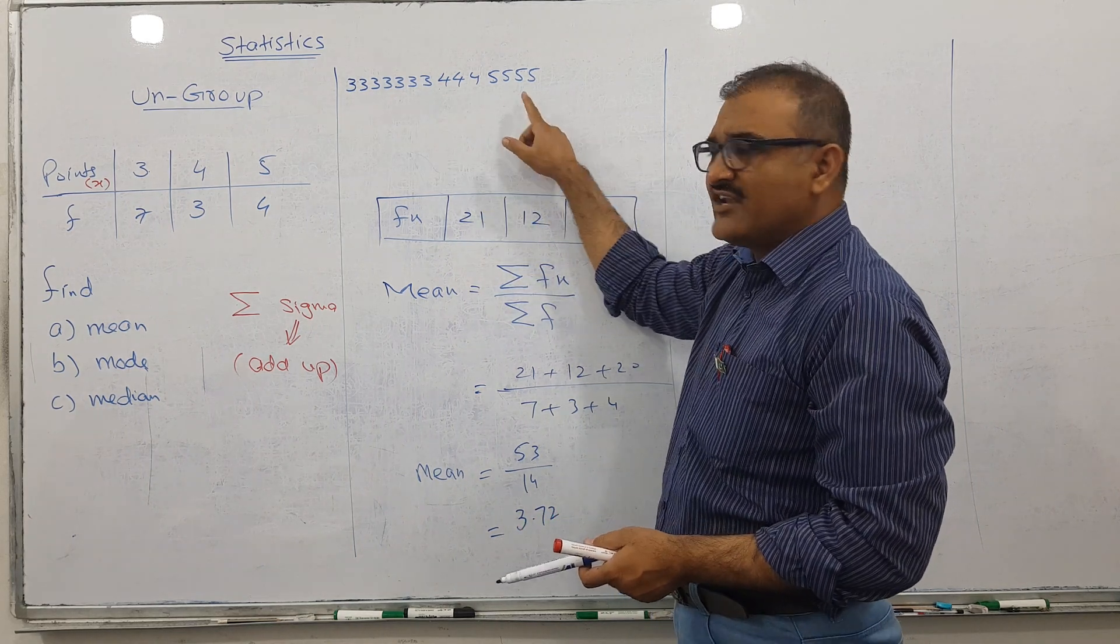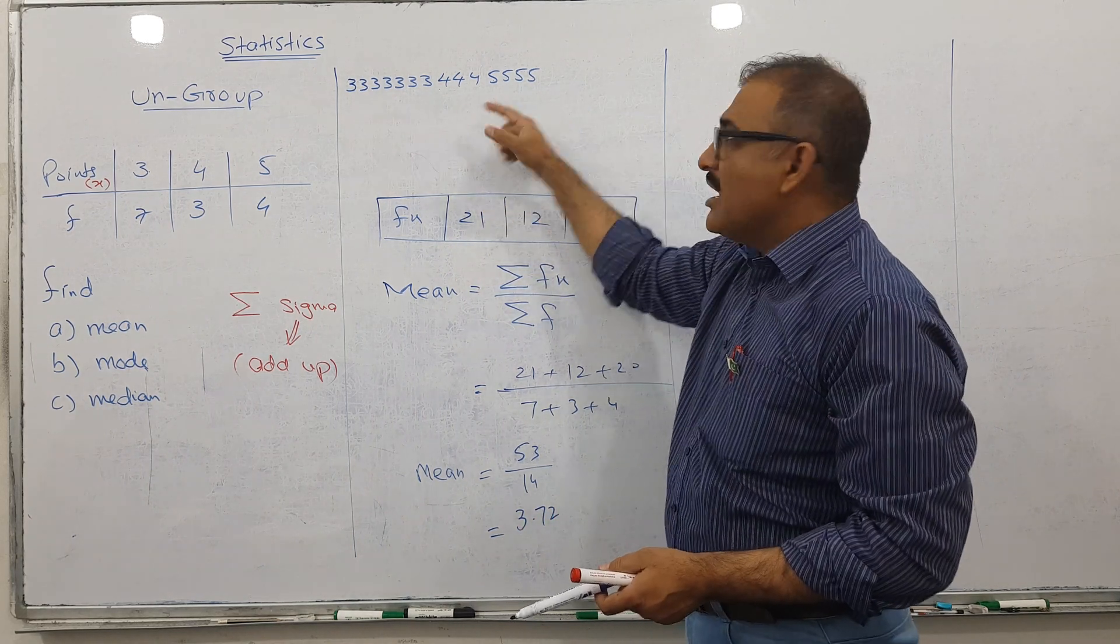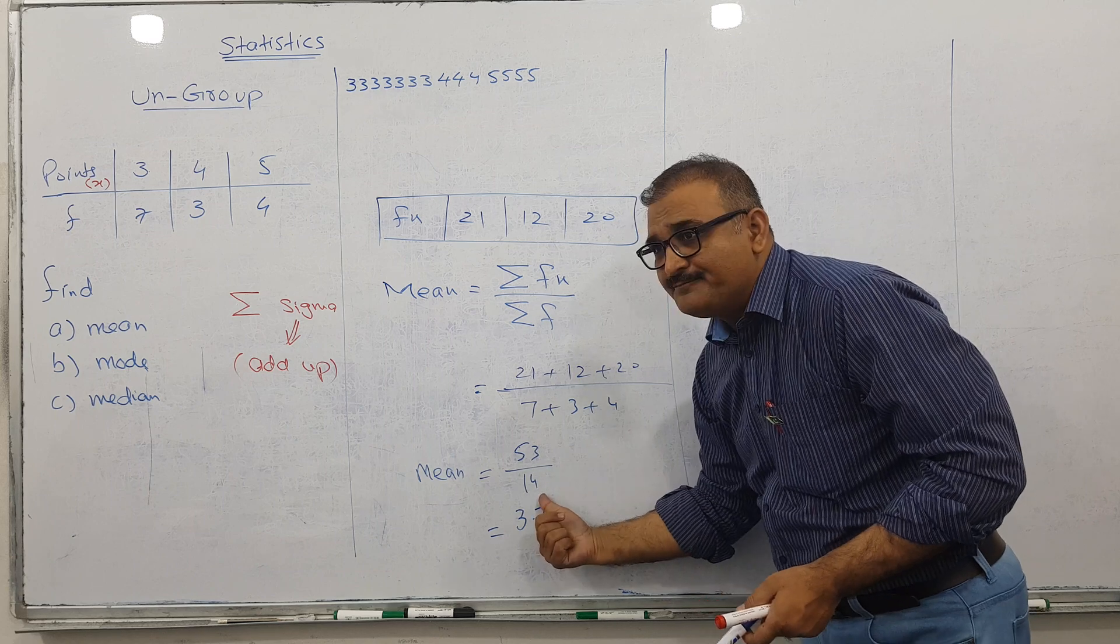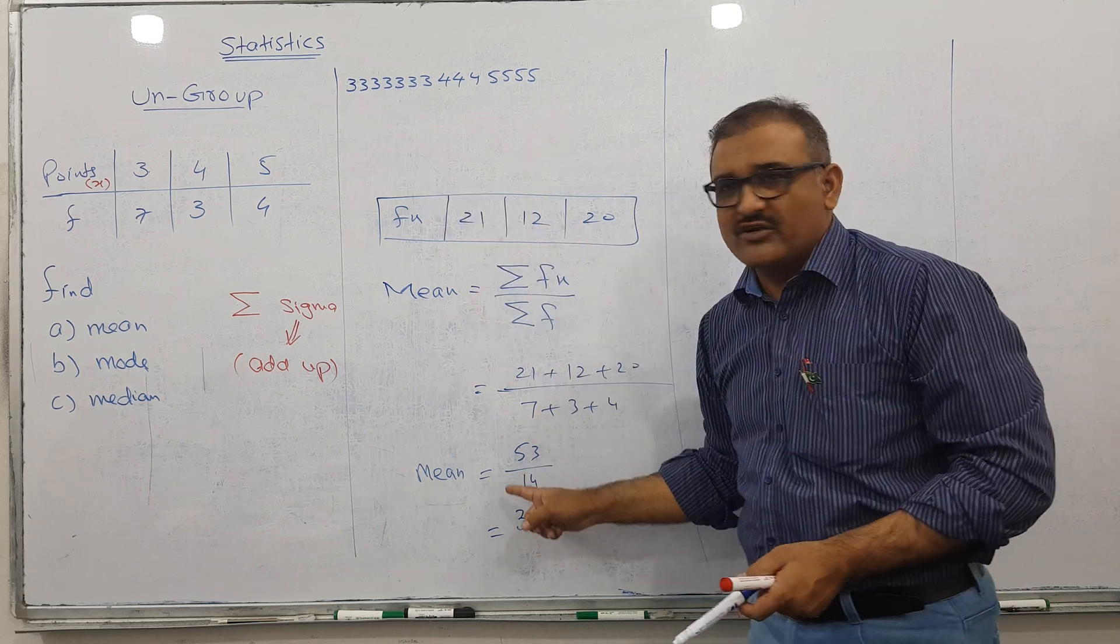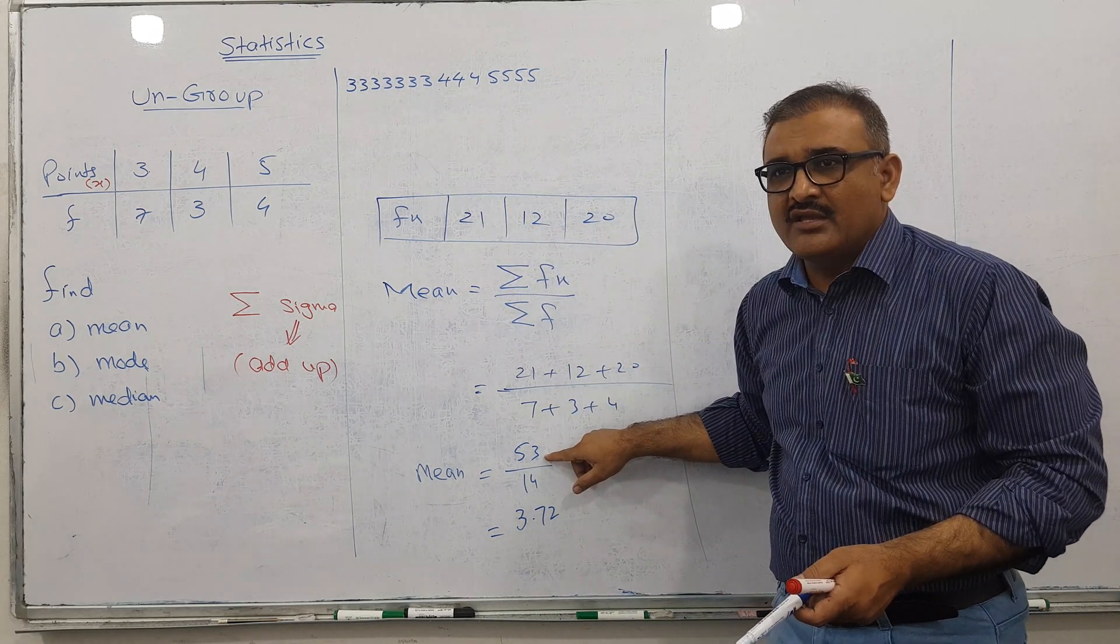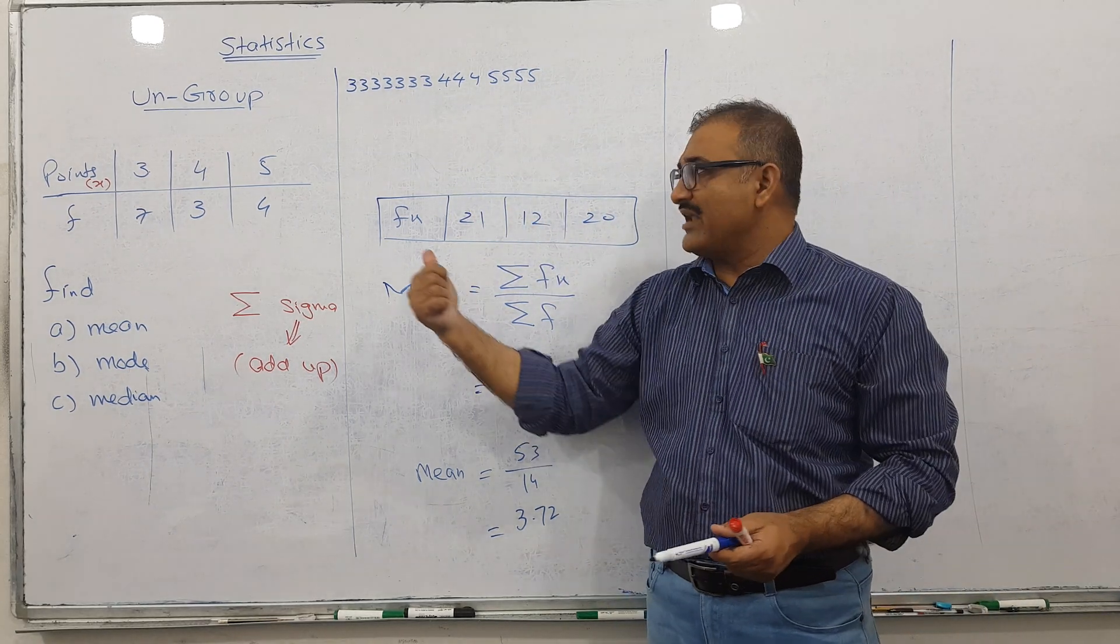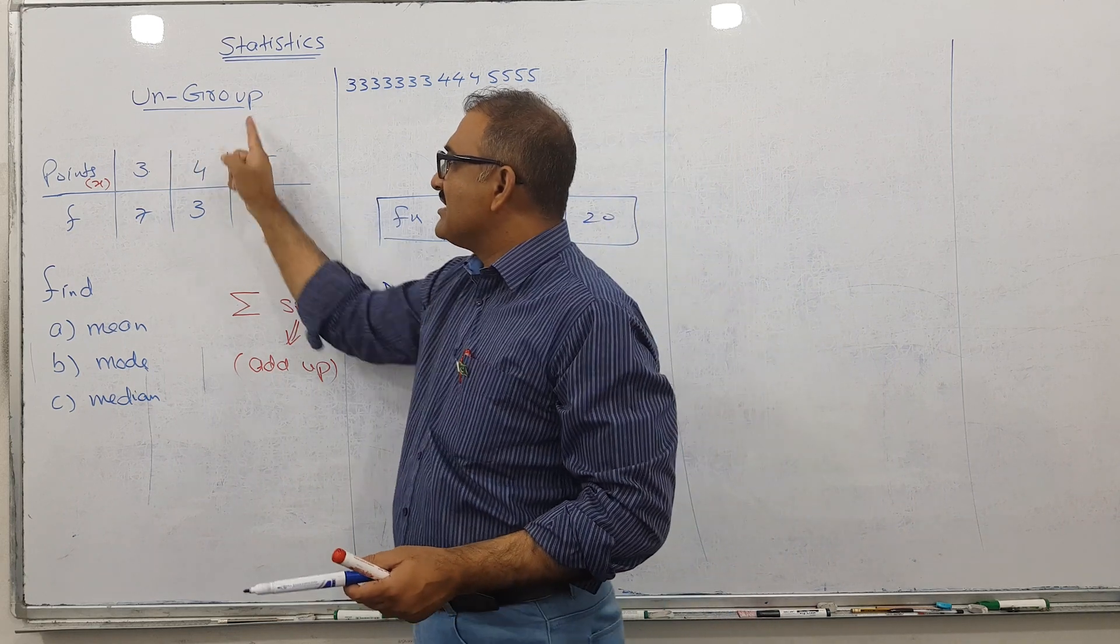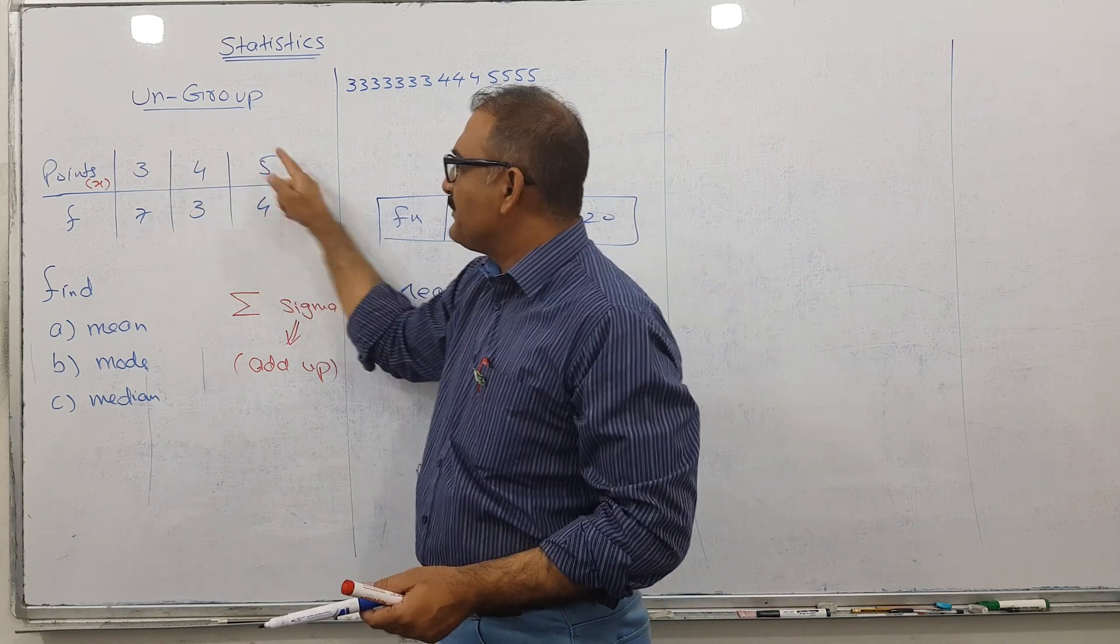The benefit of this table method for ungrouped data is that I just multiply and don't need to add everything individually. Now let's talk about mode, the easiest part of the chapter.